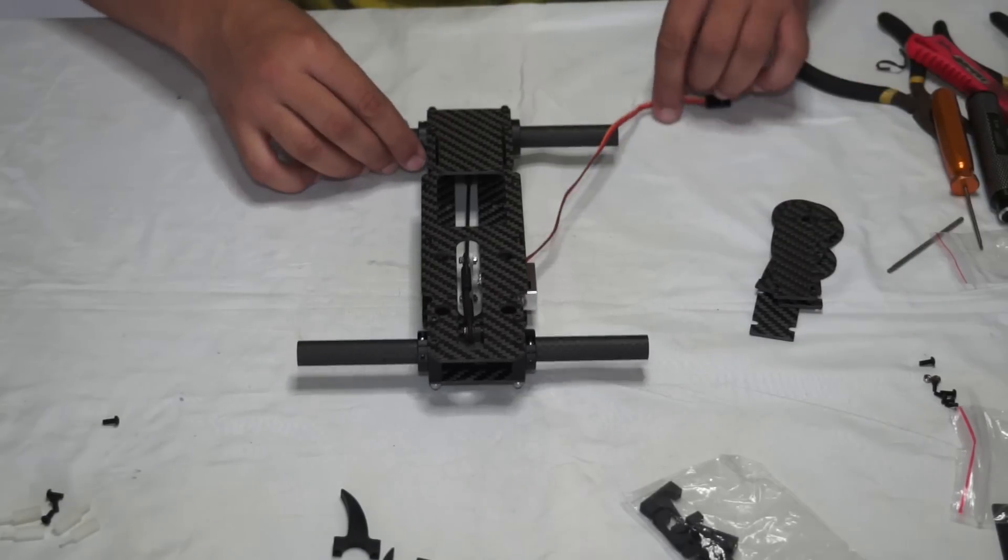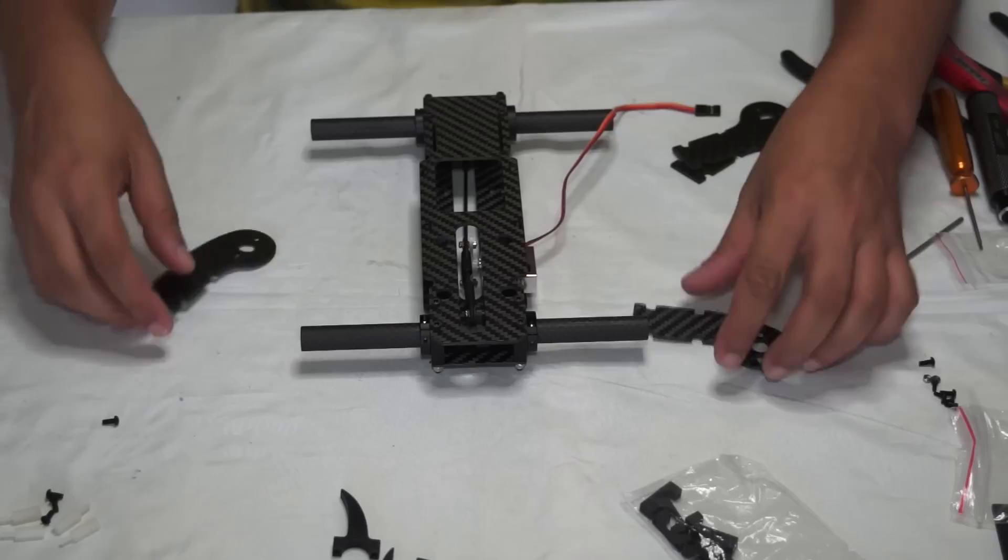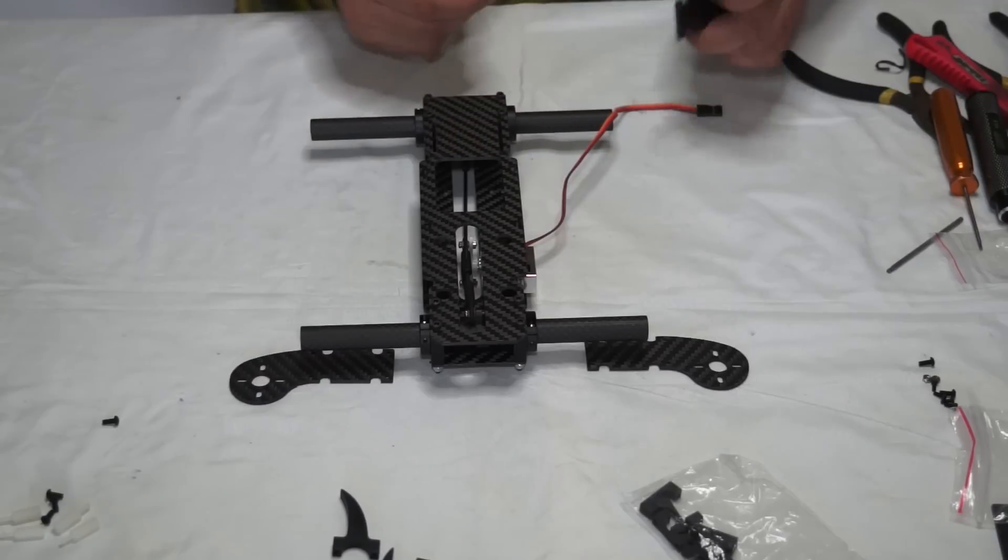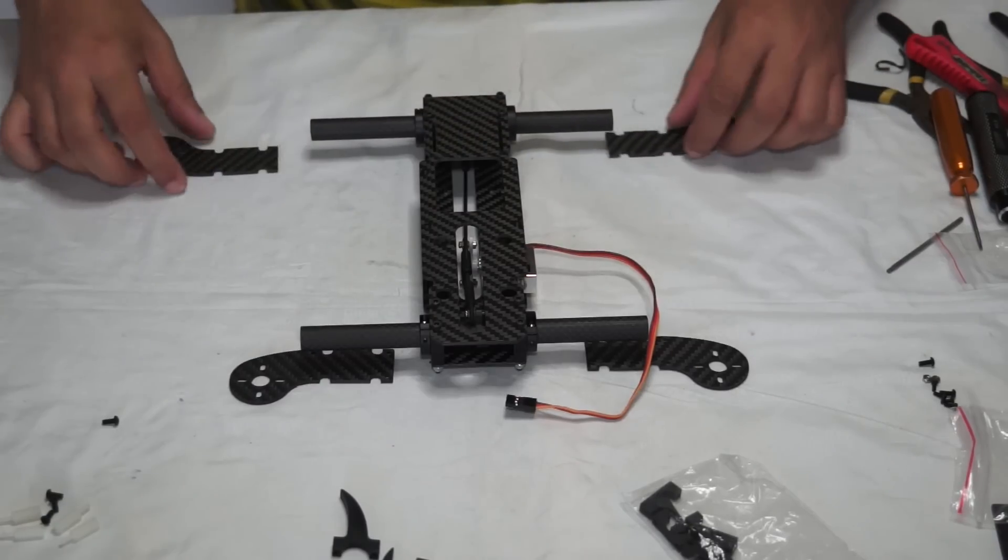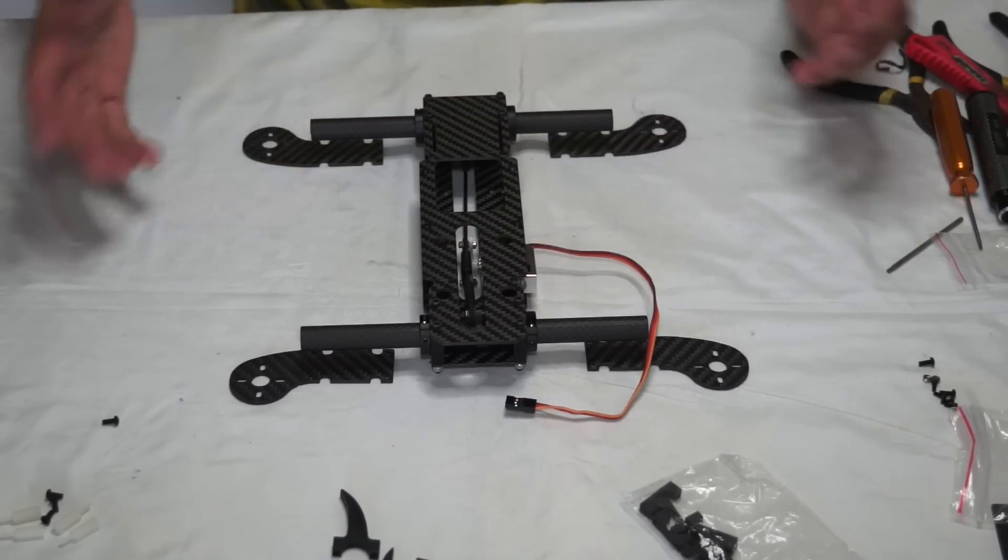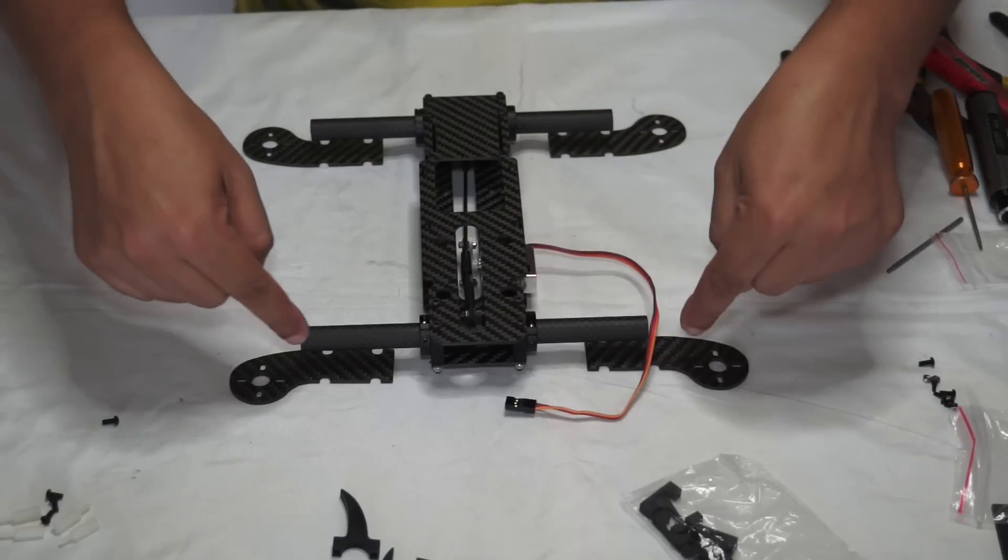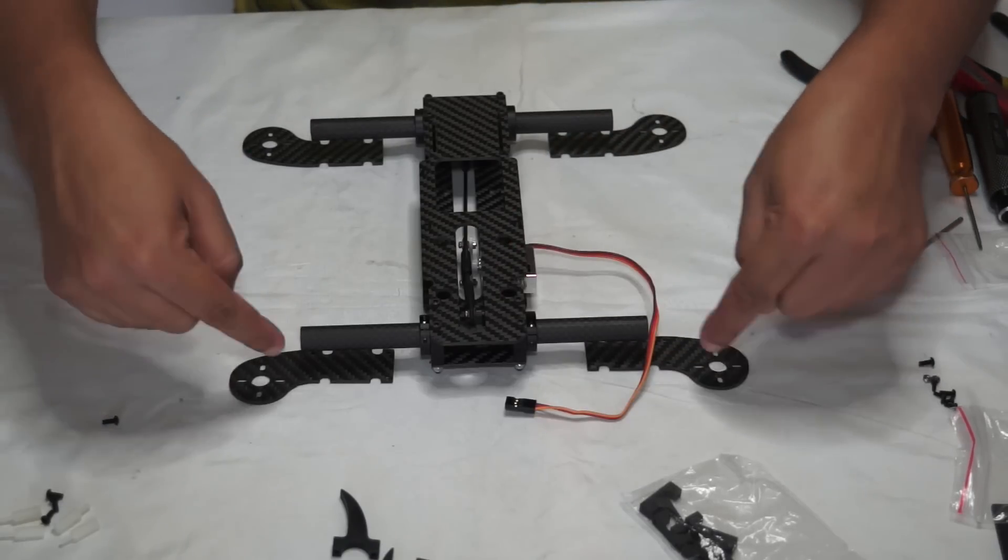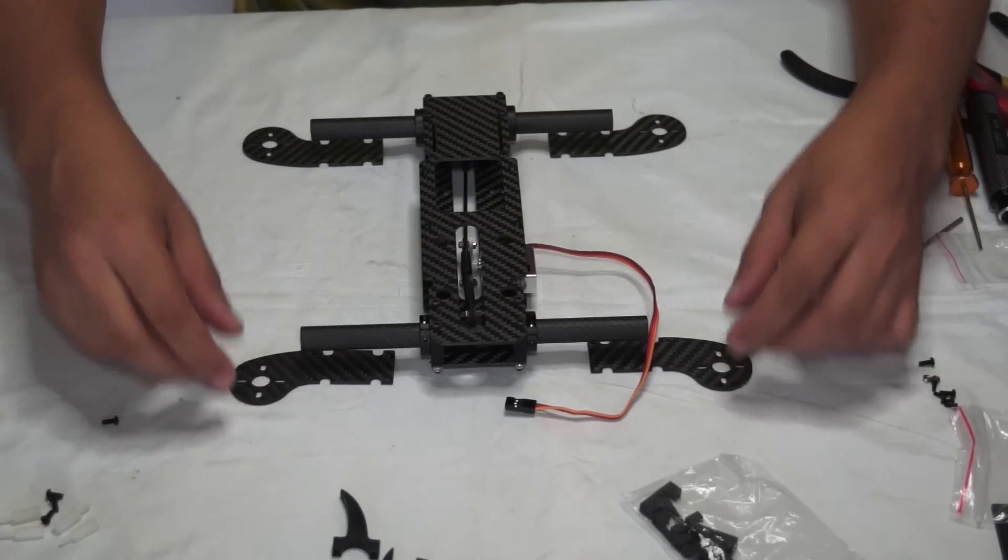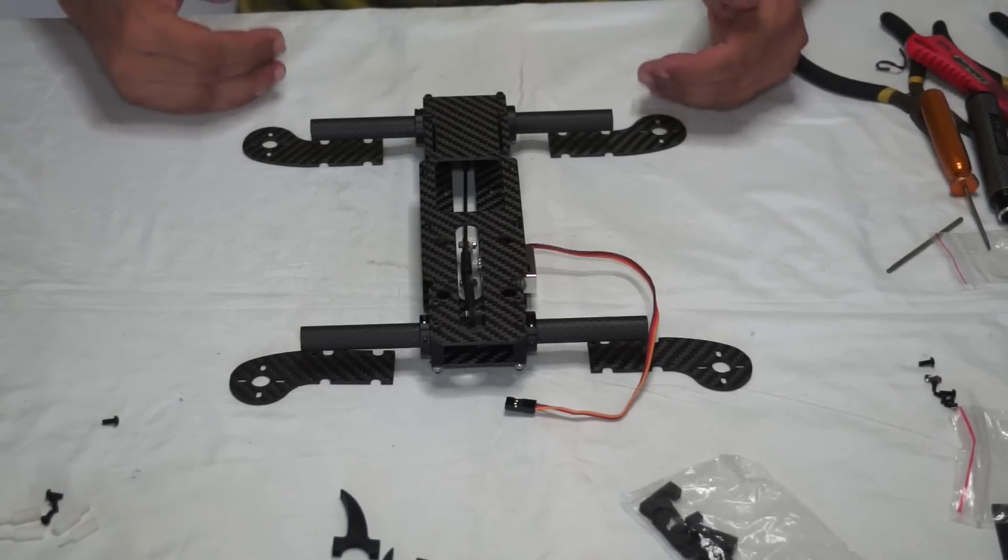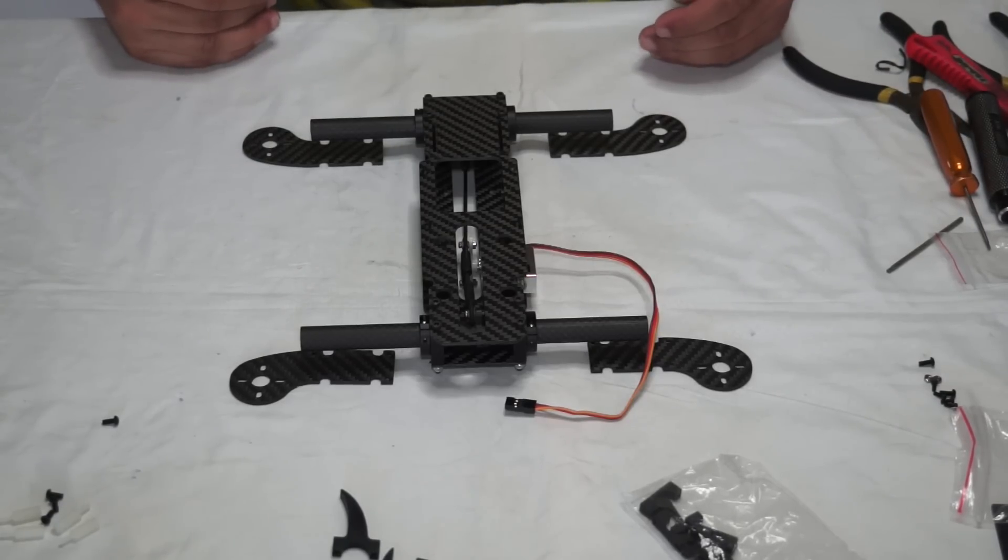Now we are on the next step to assemble the motor mounts. Remember the motor mounts will be mounted according to this layout. This is your forward section. As you can see, the motor mounts are curved. The forward section will be curved forward, the rear section will be curved at the rear of the quadcopter.